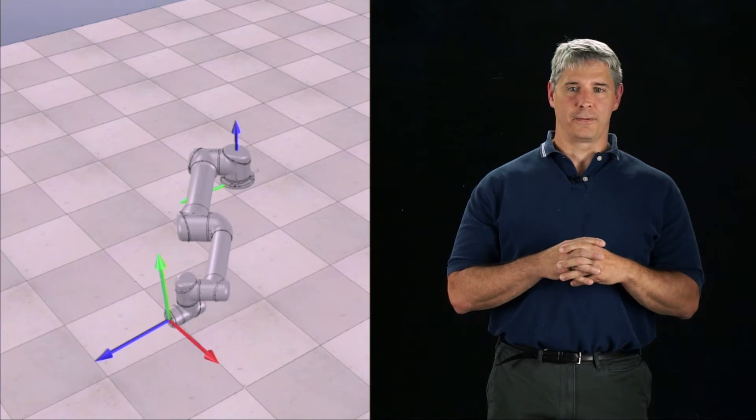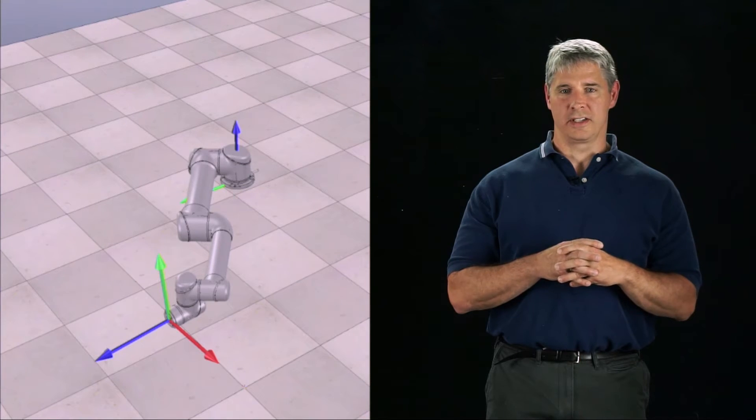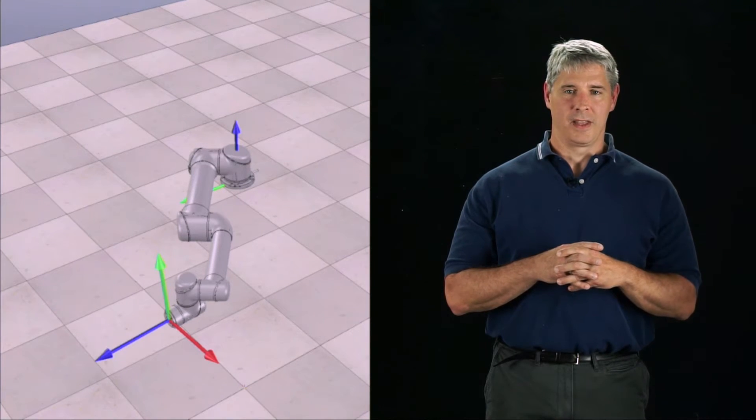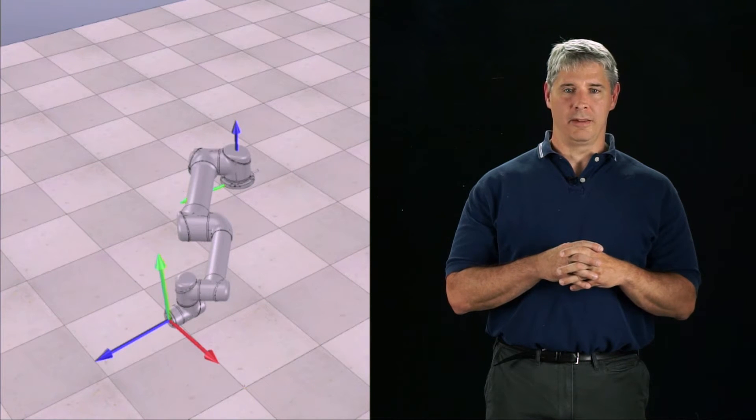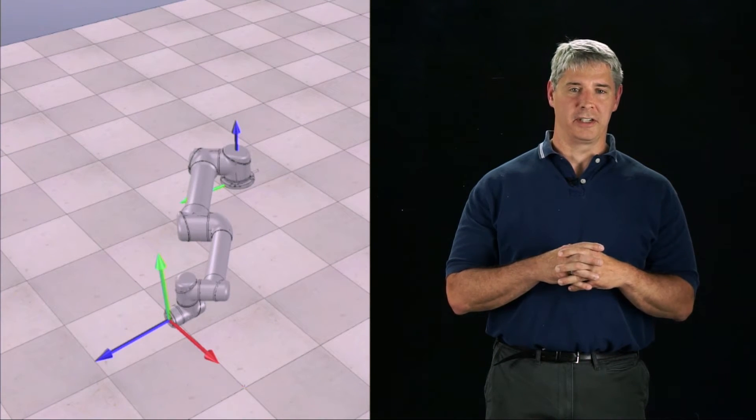One advantage of having zero friction and zero joint torques, however, is that we know that no energy is dissipated. Therefore, the total energy of the robot, the kinetic energy plus the potential energy, must be conserved.